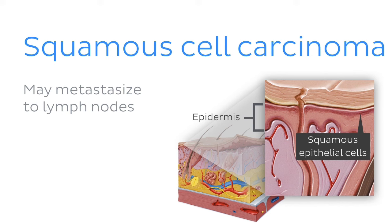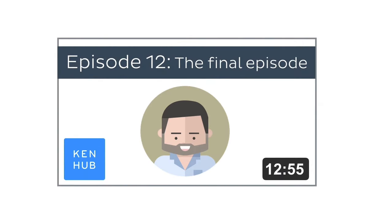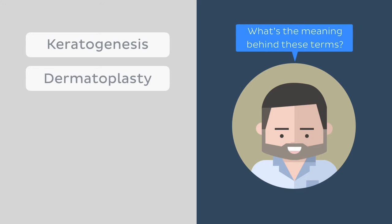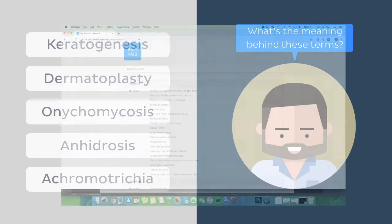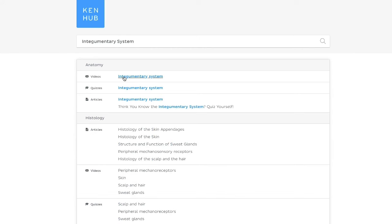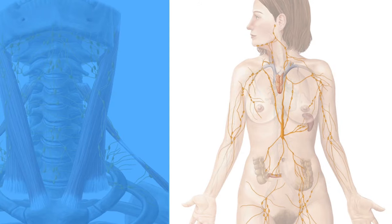That's the end of this tutorial. You're almost at the end of exploring the terminology of all the body systems — just one system left to go. Now test your knowledge by deciphering the meaning of the following words in our five-term challenge; share your answers in the comments below. Subscribe to our channel and check out KenHub.com to learn about the anatomical makeup of the skin and related structures. Join us for the final episode covering the terminology of the lymphatic system. See you next time!